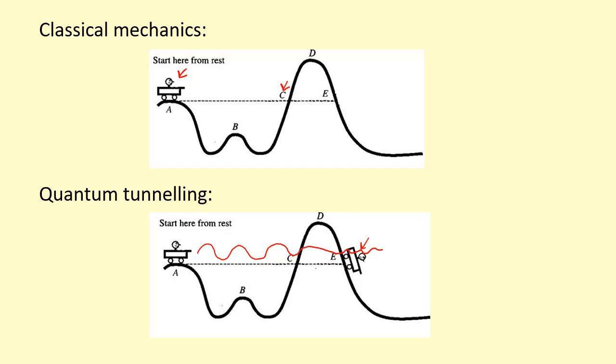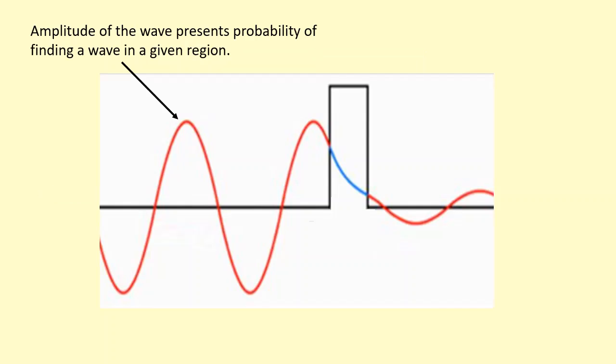There's a finite probability that these electrons can tunnel through this energy gap. The amplitude of the wave represents the probability of finding a particle in a certain region. Imagine an electron going this way, acting as a wave. There's a barrier which it normally wouldn't have the energy to pass through, but because it's a wave, it can tunnel through. The amplitude here isn't zero, so there's a tiny probability it can get through.